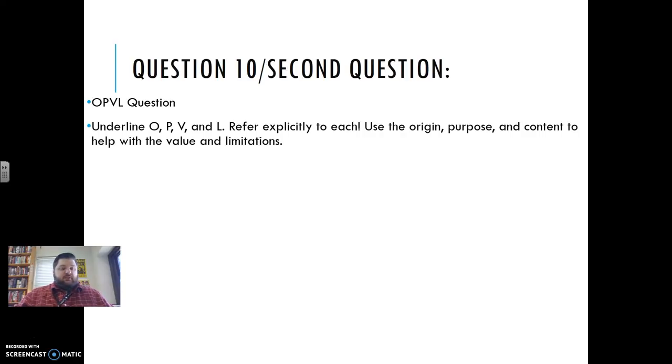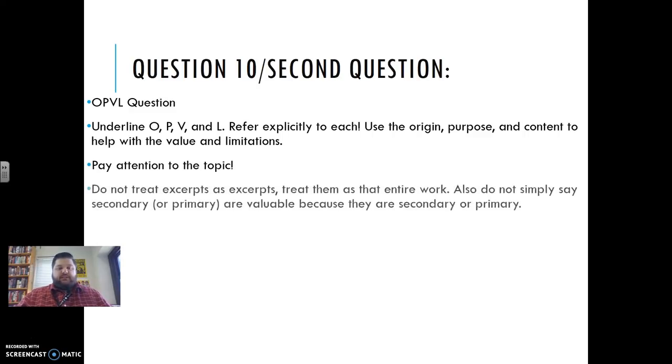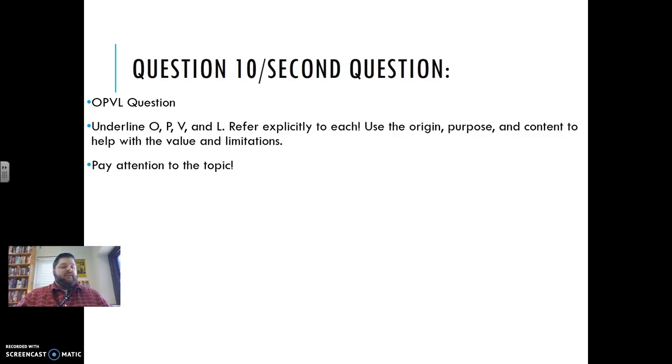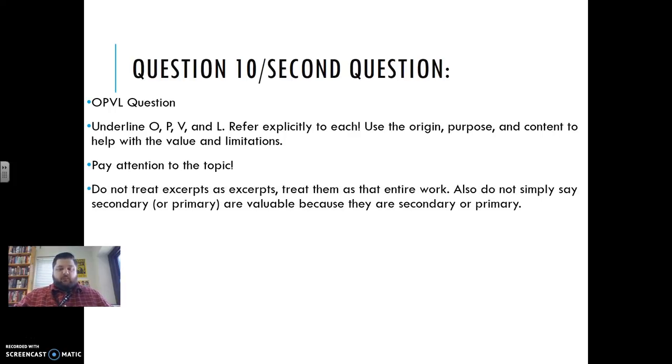So what I would do in my answer is, first off, use the language of the question. You know, with reference to origin, a value of the source for historians studying the tensions between Japan and the U.S. would be blank. You know, with reference to purpose, it is valuable, it is limiting. You need to use those exact terms, origin, purpose, content, value, limitations. Make sure you pay attention to the topic. It's not just saying, hey, why is this source valuable in general? It is saying, why is this source valuable for a historian studying the tensions between Japan and the U.S.? They don't want you just to say, it's a good source because this guy is a historian and thus could be trusted. They want to see, you know, this is a good source for studying this specific topic because it tells me X, Y, or Z. And that's derived from origin, purpose, or content. Don't treat excerpts as excerpts. Just treat it as it's the entire work. Don't say a limitation as I only see a little bit. You know, just they don't like that. Just try and pretend you have the whole source there in front of you.